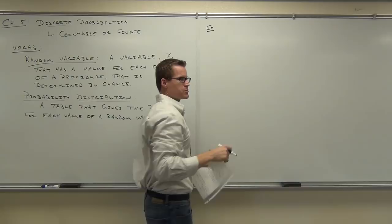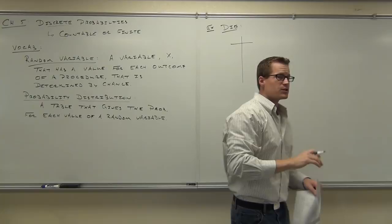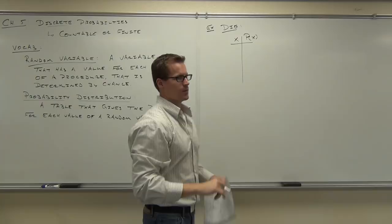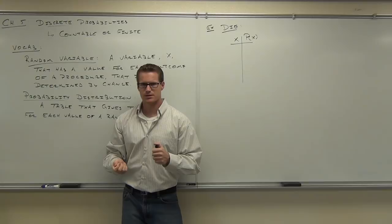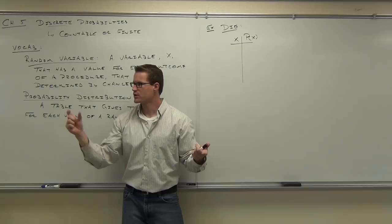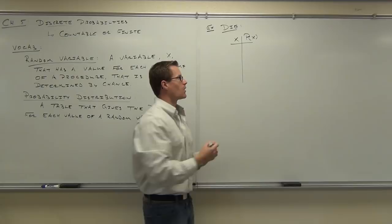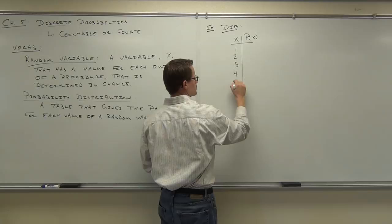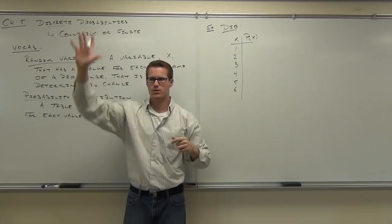Let's go ahead and do our probability distribution for rolling a die. A probability distribution is set up with your X values and the probability of achieving each outcome. If I'm rolling a single die, what are my X values? 1 through 6 — that makes sense. The random variable X takes on every value that we can get from rolling a standard die, so X goes from 1 through 6.